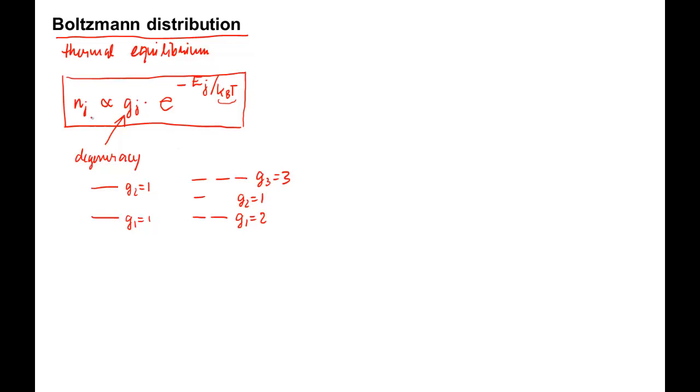Using this first equation, we can compare the populations of two different levels. The ratio of the populations is Ni over Nj, and it is equal to the ratio of degeneracies, Gi over Gj, times an exponential that contains Ei minus Ej, which is the energy difference, divided by KBT, the thermal energy. Given the energy difference, and the temperature, and the degeneracies, we can therefore calculate the ratio of populations of two energy levels.